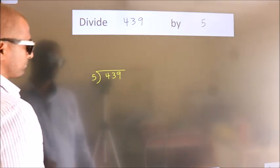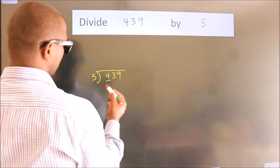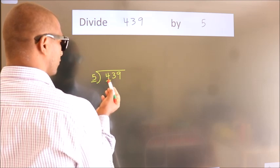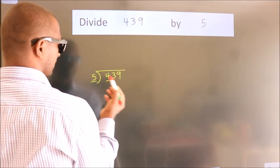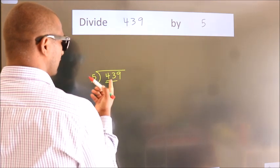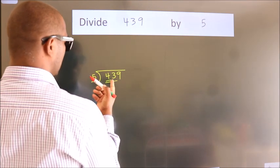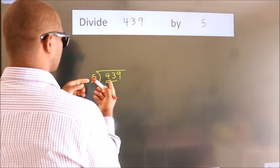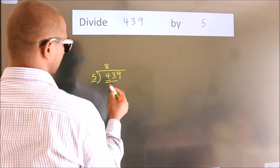Next. Here we have 4, here 5. 4 smaller than 5. So we should take two numbers, 43. A number close to 43 in 5 table is 5 8s 40.